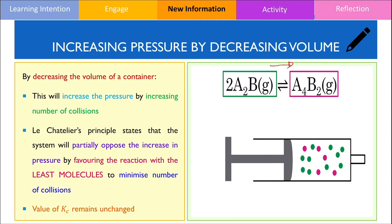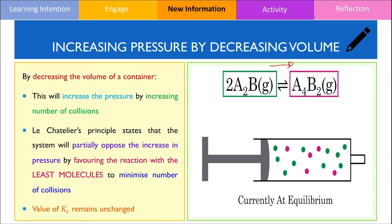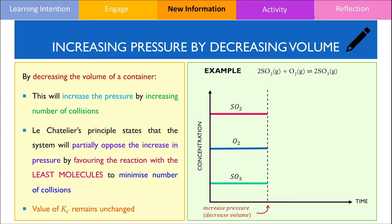This time, we're going to look at the effects of increasing pressure by tracking the changes on a concentration-time graph. Because we are decreasing the volume or increasing the pressure, the concentration of all gaseous species — both reactants and products — suddenly spike up as illustrated on the graph. According to Le Chatelier's principle, the system will partially oppose the increase in pressure by favouring the forward reaction because it produces the lowest number of molecules in an attempt to lower the number of collisions.